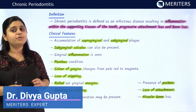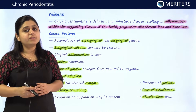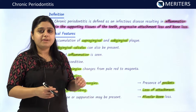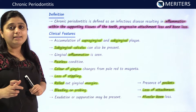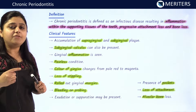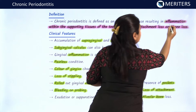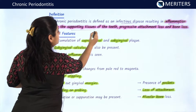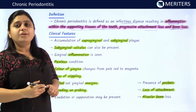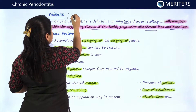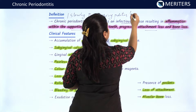Hello, today we are here to discuss chronic periodontitis. In today's lecture we are going to cover the definition of chronic periodontitis, different clinical features and radiographic features, how they are classified, and various important points. Chronic periodontitis is the infectious disease of the periodontium which results in inflammation of the supporting tissues of the teeth and progressive attachment and bone loss. It is also known as slowly progressing periodontitis and Riggs disease.